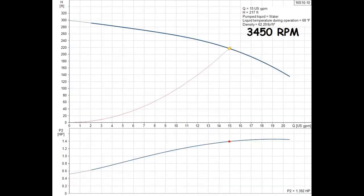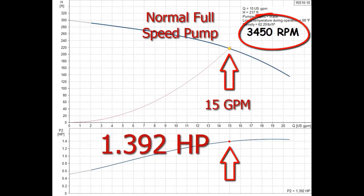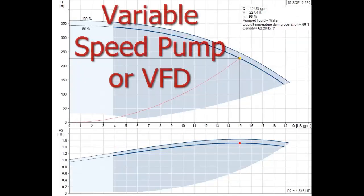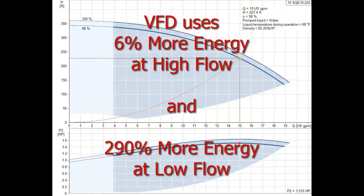Then if you compare a normal full speed pump producing 15 gallons per minute at 1.392 horsepower to the variable speed pump at 1.515 horsepower, the variable speed pump is using 6% more power per gallon produced at high flow rates. Even with state of the art technology, permanent magnet motors and all that, variable speed pumps always use more energy per gallon, not less.